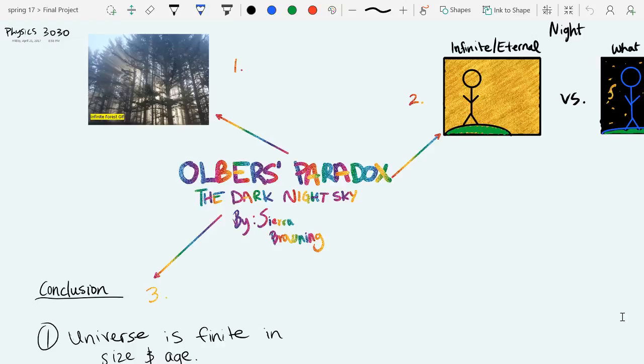Every night that we look up into the sky, we see stars, as well as darkness surrounding the stars. Because the night sky is overall dark, it contradicts the theory that the universe is infinite and eternal. This is called Olbers' Paradox.